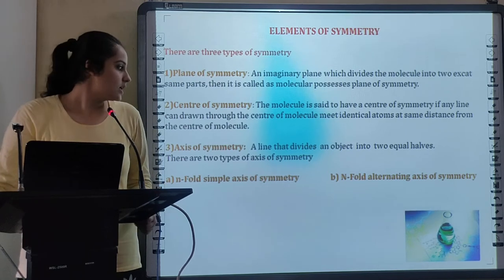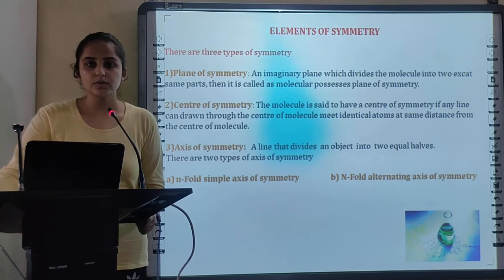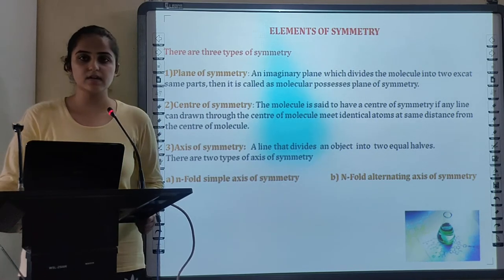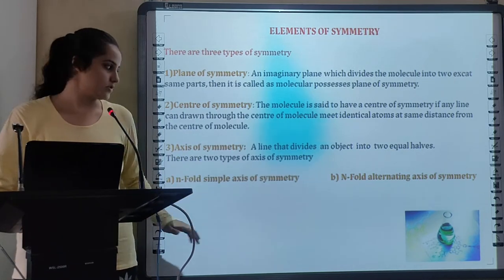Next is Axis of Symmetry. If an axis or line divides an object or molecule into 2 equal halves then it is called as Axis of Symmetry. Axis of Symmetry has 2 types: N-Fold Axis of Symmetry and N-Fold Alternating Axis of Symmetry.